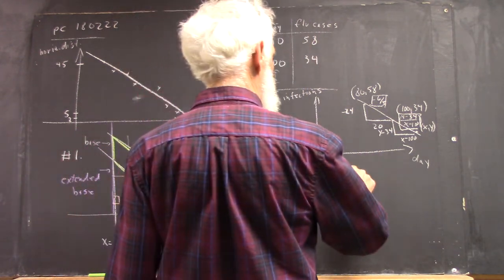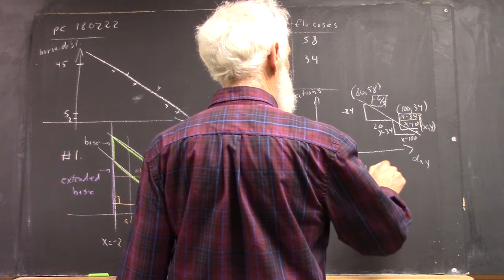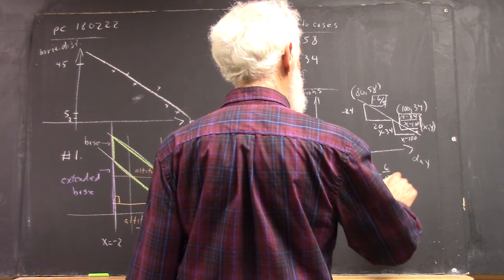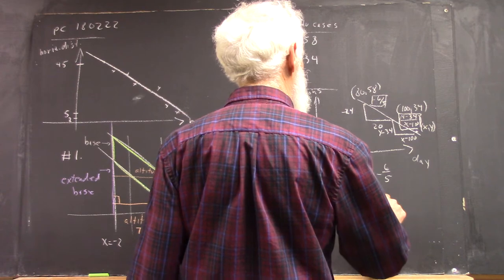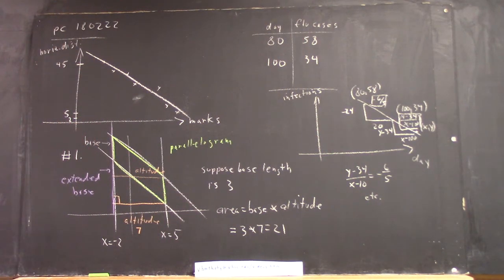And now we can simply write, well, this slope is equal to this slope. And we get the equation, right?